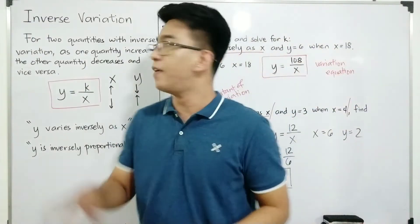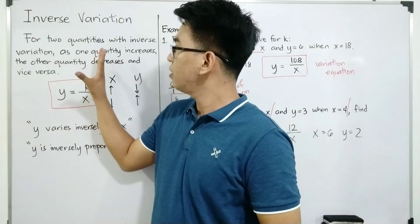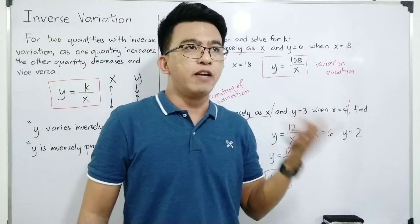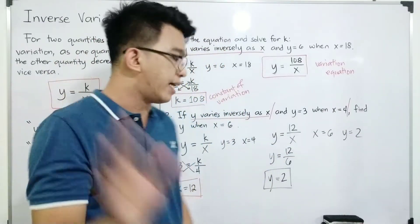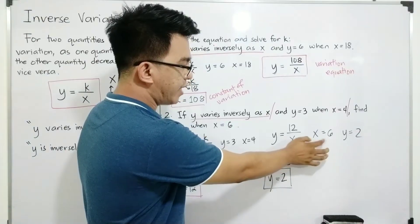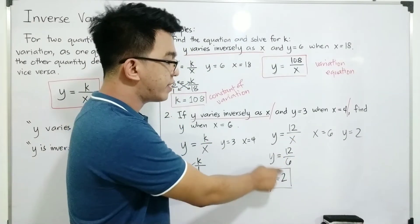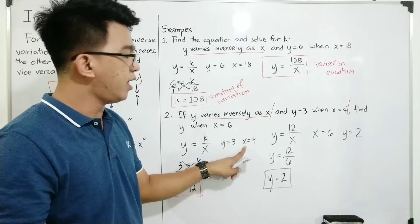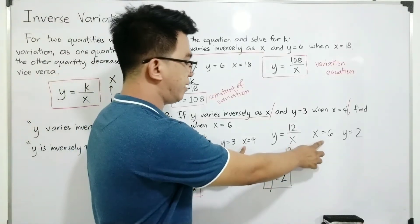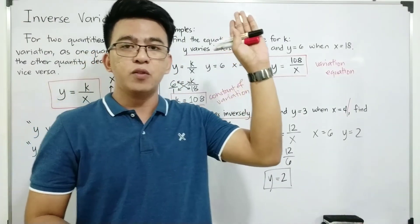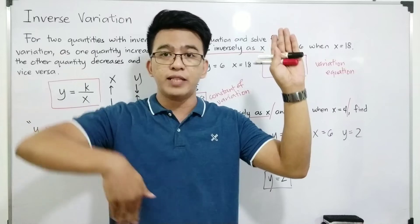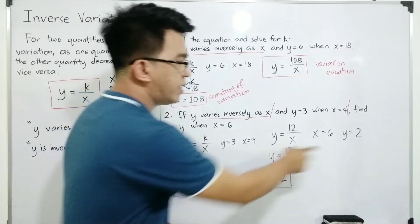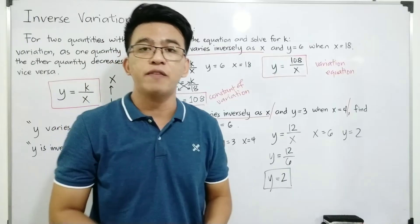Let's observe if we can satisfy the given characteristic of inverse variation. If one variable goes up, the other goes down — or if one variable goes down, the other goes up. Your x here is 4, and then x is 6. From 4 to 6, the variable x goes up. So the tendency for y is it will go down — from 3, it became 2. So as you can see, this one is definitely an example of inverse variation.